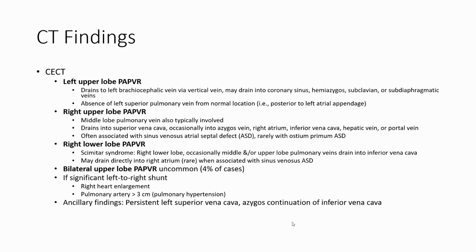Absent left superior pulmonary vein from its normal location, considered to drain to the left atrial appendage. In right upper lobe PAPVR, the middle lobe pulmonary vein may also drain into superior vena cava, occasionally into the azygos vein, right atrium, inferior vena cava, hepatic vein, portal vein, or paracardiac sinus. Associated with sinus venosus-type ASD, rarely with ostium primum ASD.